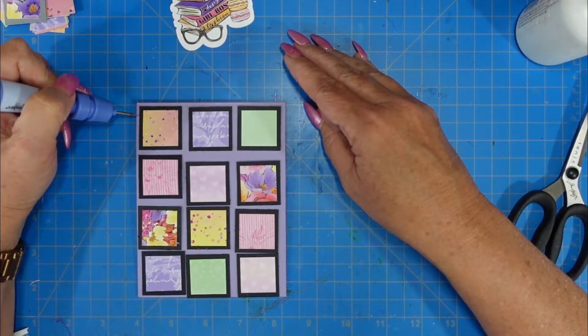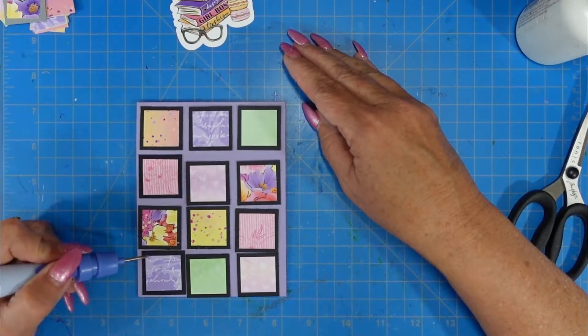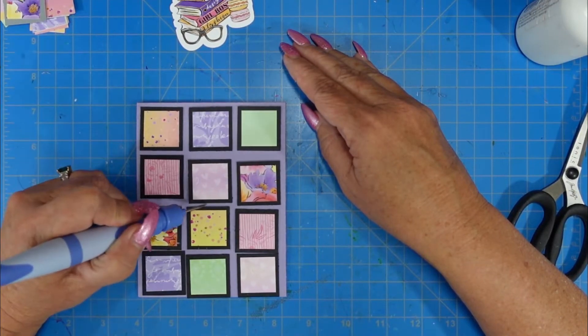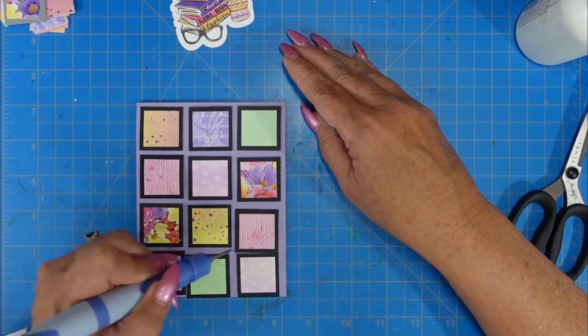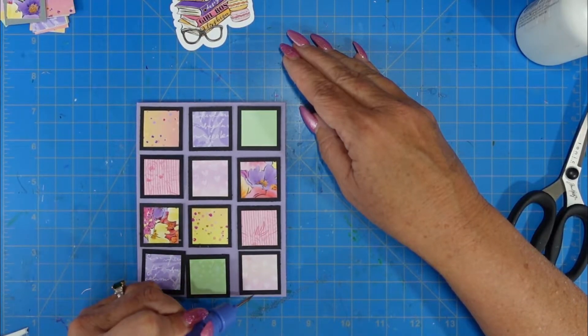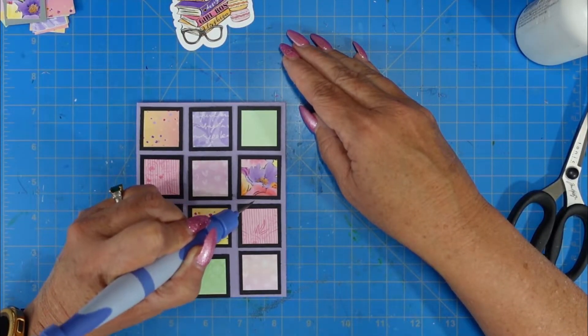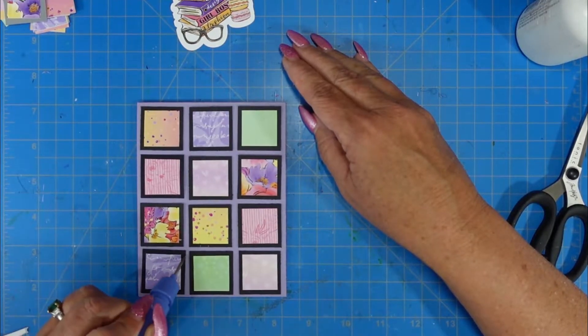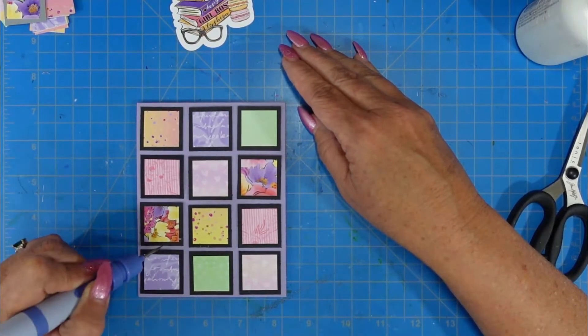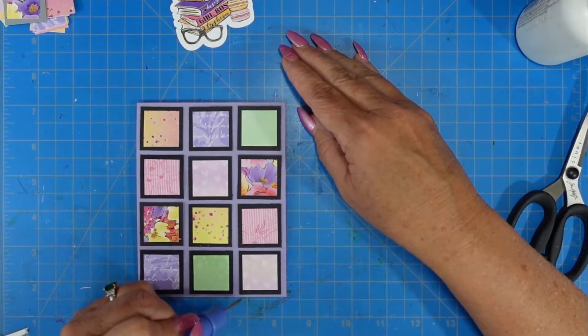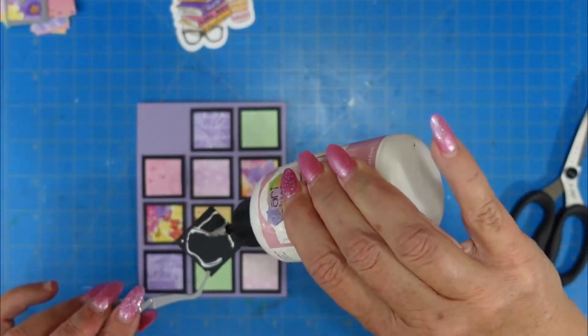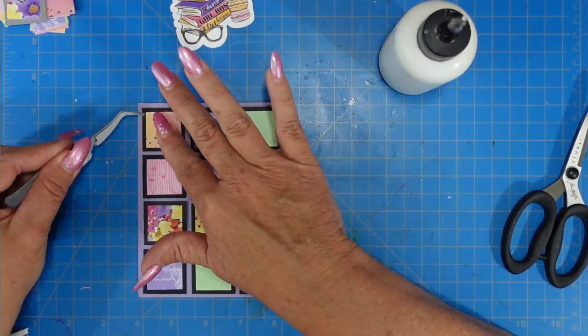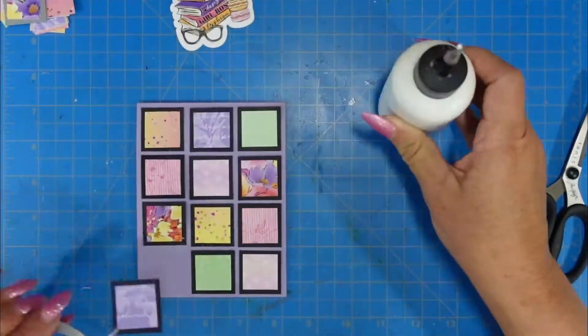I am not a perfectionist by any means. I know this might drive some of you crazy, and I'm going to apologize in advance because this is not going to be perfect. It's going to be eyed. That's the way I do things, and I'm going to get it as even as I possibly can without having to take time measuring it. So once I get it laid out the way that I want it, I am going to use my art glitter glue.